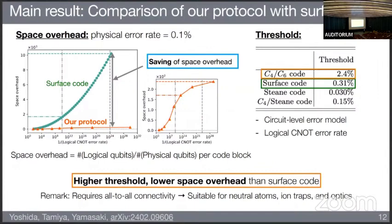We also compare the threshold of our protocol with the surface code. The threshold of our protocol is determined by the threshold of the underlying C4-C6 code. From numerical calculations under circuit-level noise evaluating the logical CNOT error rate, we obtain a threshold of 2.4% for our protocol, while the surface code achieves 0.3%. We constructed a higher-threshold and lower-space-overhead protocol than the surface code. One remark is that our protocol requires all-to-all connectivity, making it suitable for neutral atoms, ion traps, or optical systems which allow long-range interaction.